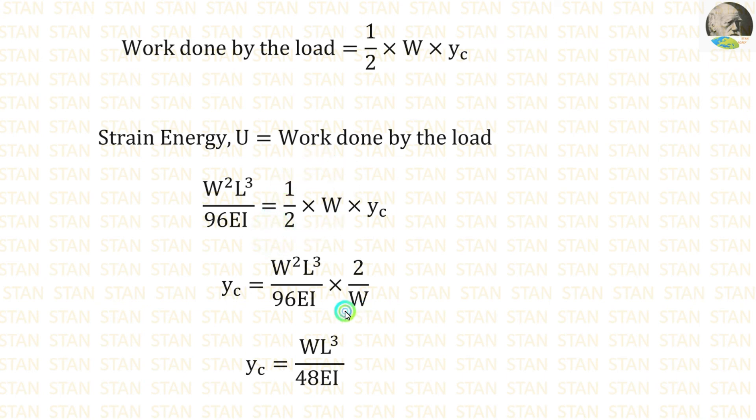We have already got the strain energy and the work done by the load. We can take W by 2 on the left side. It will come to the left side as 2 by W. Now we can cancel this square and W and 2 and 96. Finally we are getting YC equals WL power 3 divided by 48EI.